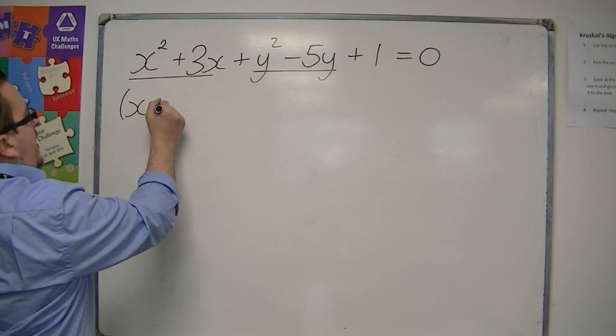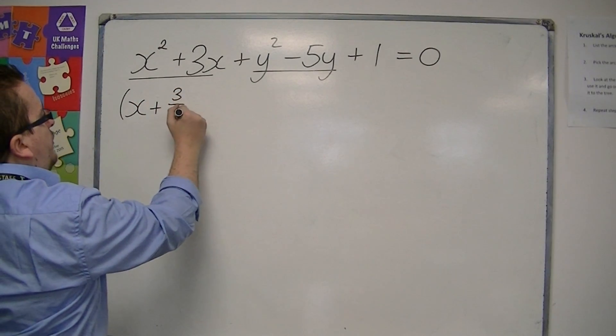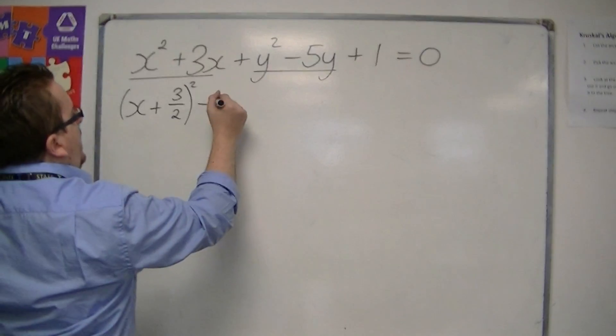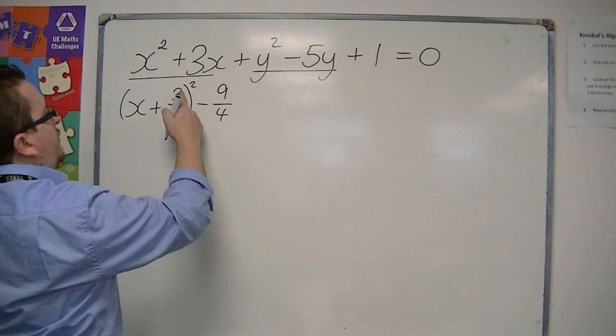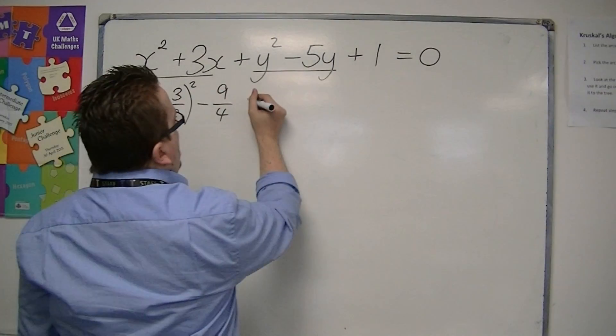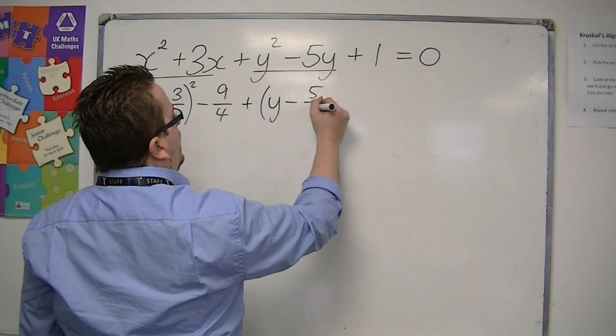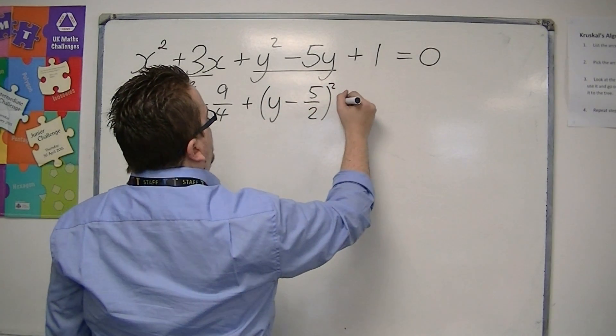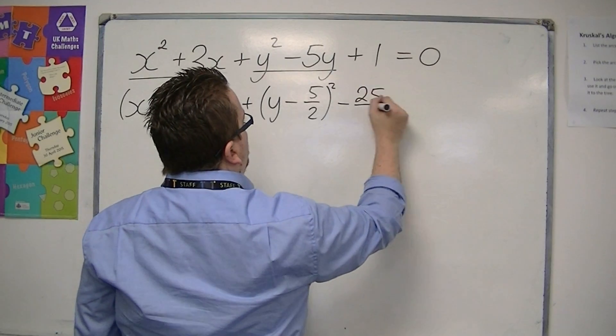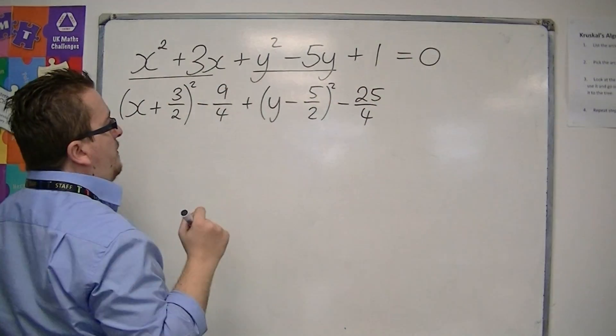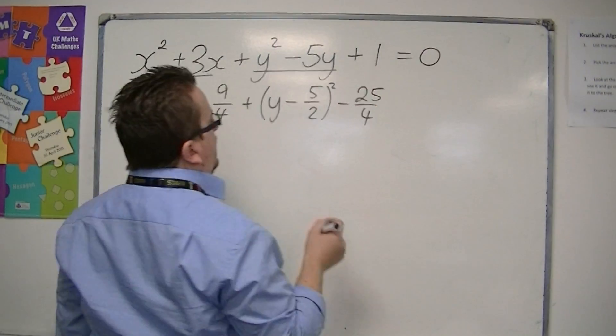So I'm going to have x plus 3 over 2 squared, take away 9 quarters, because I've squared top and bottom. And then for this part, I'm going to have y minus 5 halves squared, take away 25 over 4, squared top and bottom. And then I've got this plus 1.